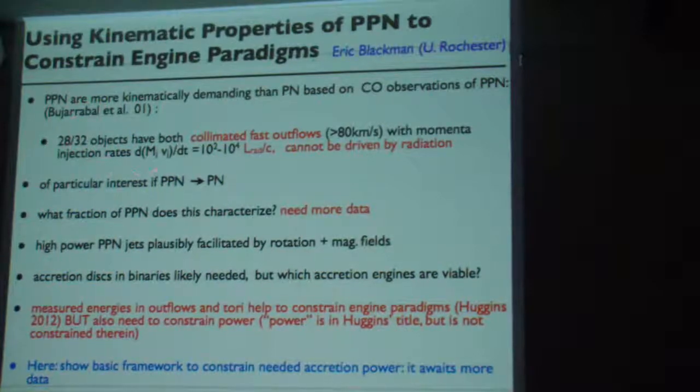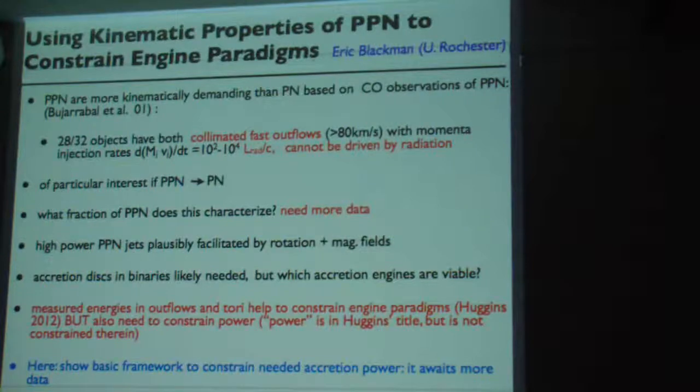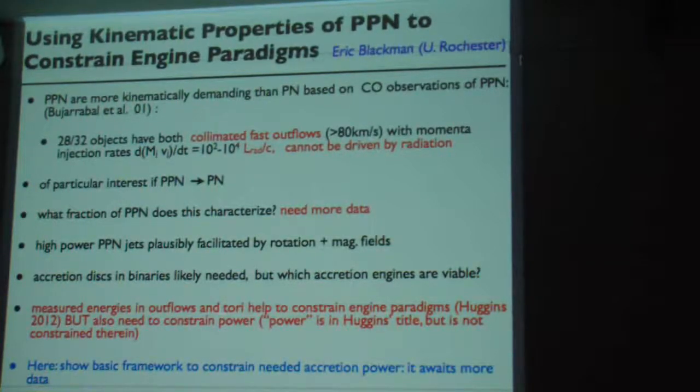The PPN is very influential in our thinking about what can possibly empower the bipolar outflows. In particular, one paper keeps me awake at night because the momentum found to empower these populations of 28 or so PPN exceed the radiation available by several orders of magnitude. These are more demanding from a mechanical luminosity and momentum point of view than any PN. So if the PN is our extension of the PPN, it's just accretion and the time evolution of accretion.